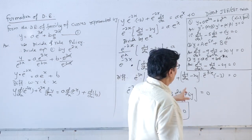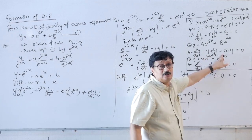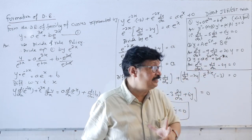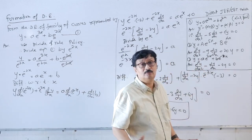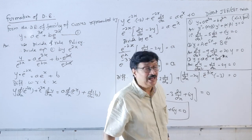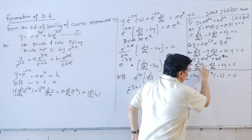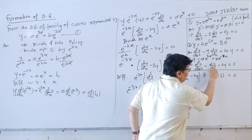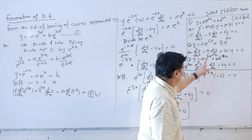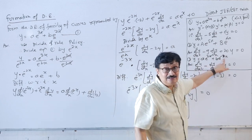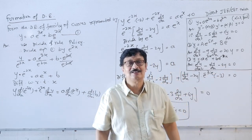One more example: y = ae^(3x) + be^(−2x). Direct answer: alpha = 3, beta = −2, so alpha + beta = 1, but the middle term is minus, giving d²y/dx² − dy/dx + alpha·beta·y = 0. Since 3×(−2) = −6, the answer is d²y/dx² − dy/dx − 6y = 0.